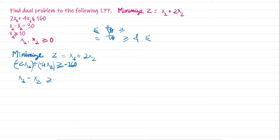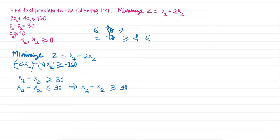The second constraint x1 minus x2 equal to 30 is written as x1 minus x2 greater than or equal to 30, and also x1 minus x2 less than or equal to 30. We convert the less-than-or-equal-to form to greater-than-or-equal-to by multiplying by minus 1, giving minus x1 plus x2 greater than or equal to minus 30. The last constraint is x1 greater than or equal to 10, and x1, x2 greater than or equal to 0.